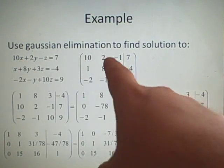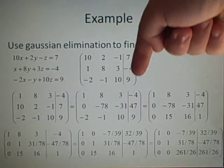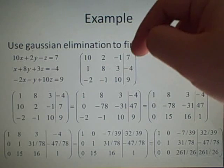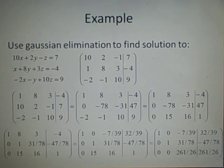So we have 10, 2, minus 1, and then our values down the side, 7, minus 4, 9. And we put the line just to separate so we don't get confused.